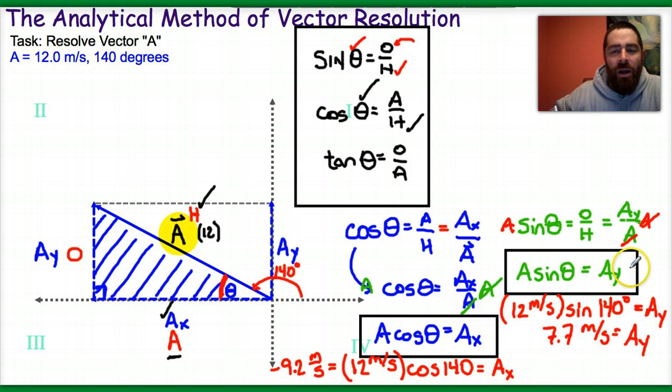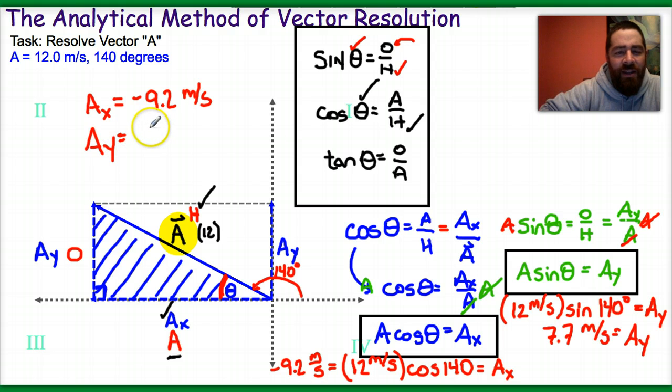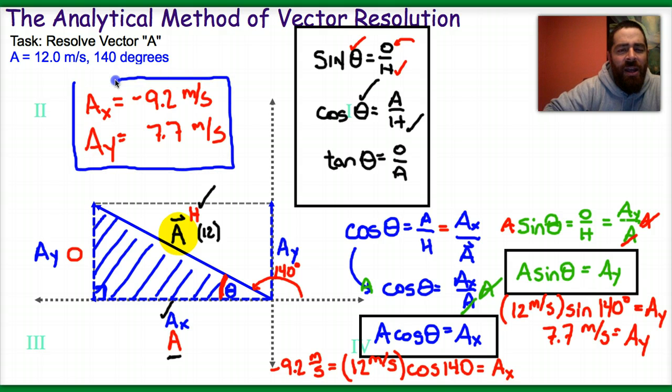So I guess I could present this a little bit more formally. My final answer then, the components A_x is negative 9.2 meters per second, and A_y should be positive, and it's 7.7 meters per second. And those would be acceptable answers. And the best, I really think, the fastest way to do this. Once you get good at using these trig functions, it takes no time at all to get this done.